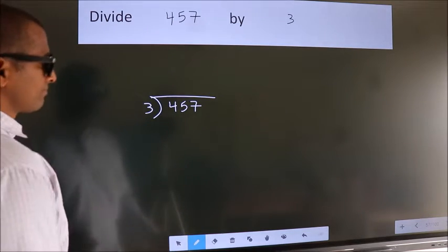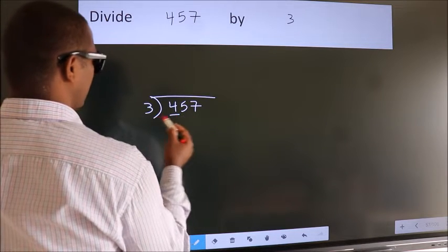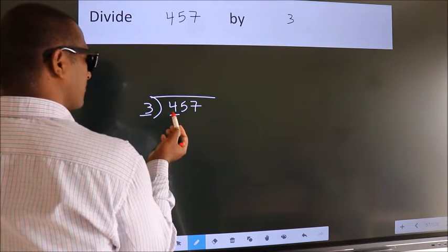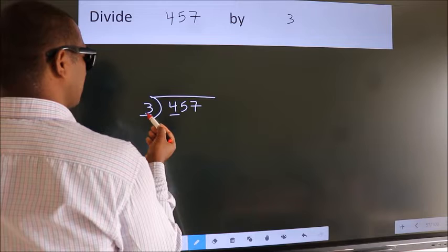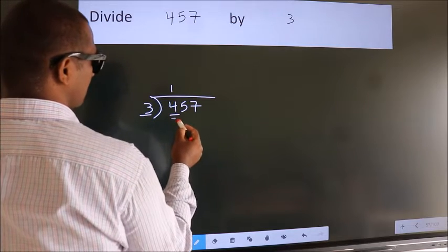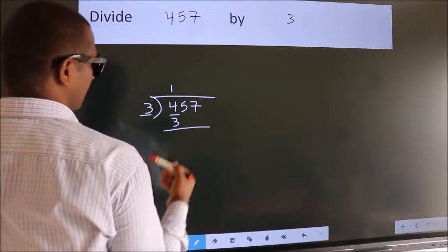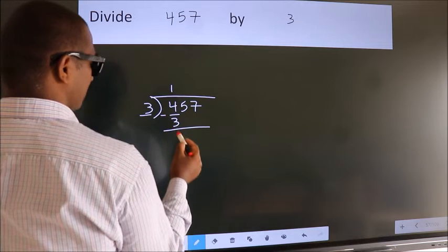Next. Here we have 4, here 3. A number close to 4 in 3 table is 3 1s 3. Now, we should subtract. We get 1.